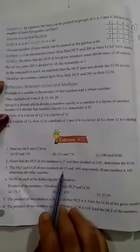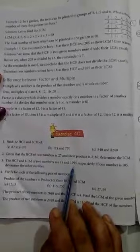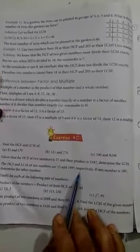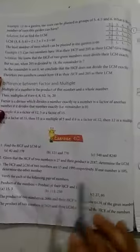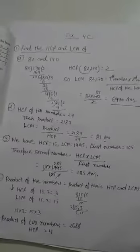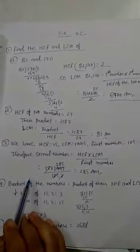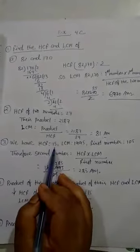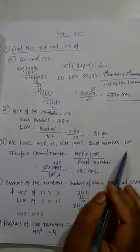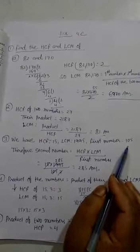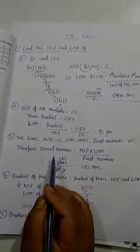Next question: the HCF and LCM of 2 numbers are 15 and 1995 respectively. If one number is 105, then determine the other number. We have HCF equal to 15 and LCM 1995. First number is 105, so we have to find other number.